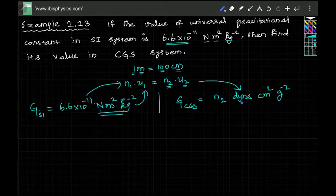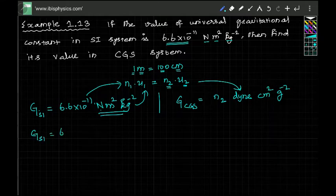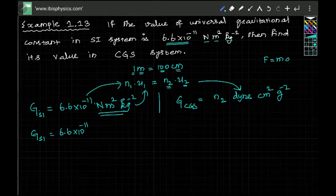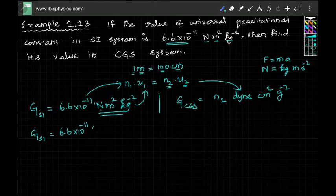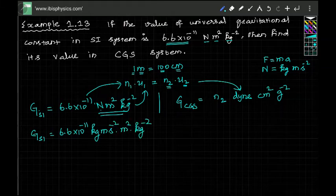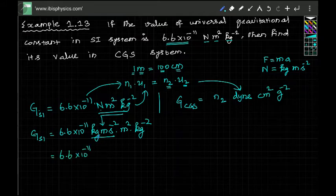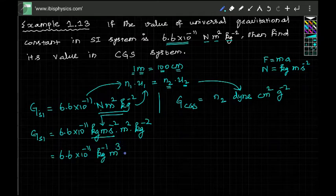You can substitute directly knowing 1 Newton = 10⁵ dyne, or expand Newton as a derived unit: force = mass × acceleration, so 1 Newton = 1 kg·m/s². Substituting this for Newton, we get 6.6×10⁻¹¹ kg·m/s² × m²/kg², which simplifies to 6.6×10⁻¹¹ kg⁻¹·m³·s⁻².